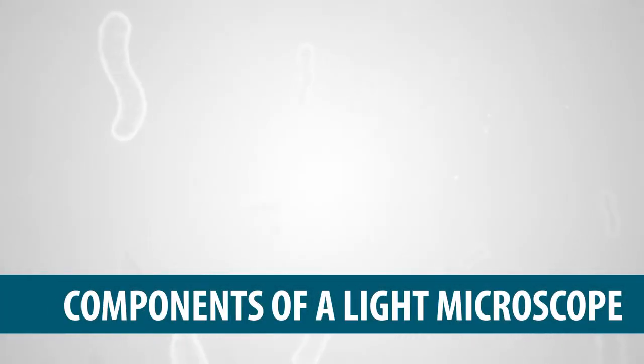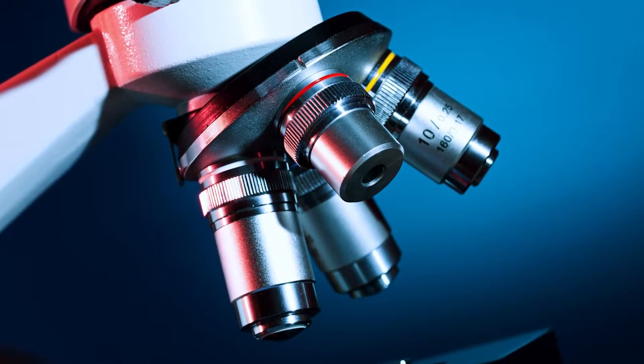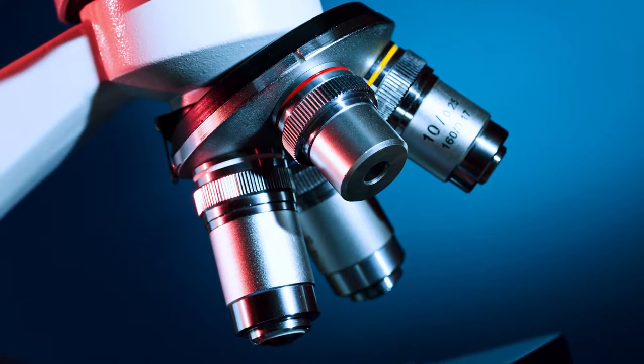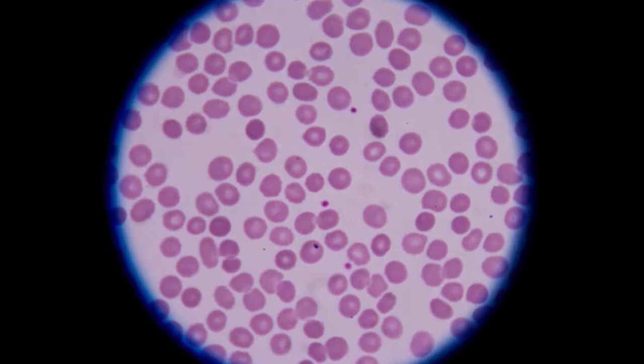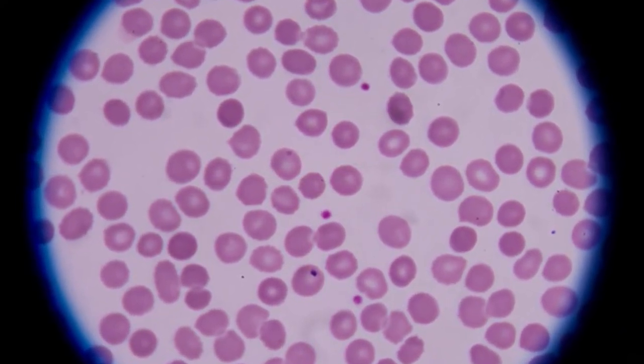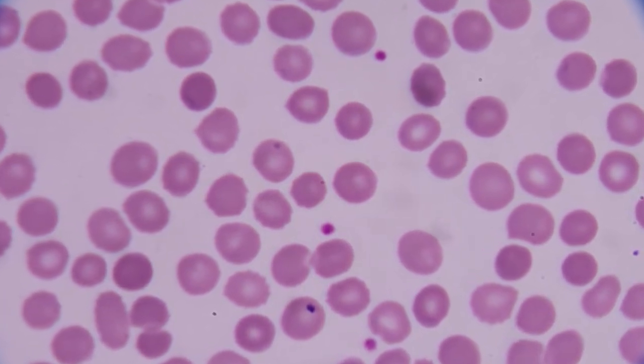Components of a light microscope. Brightfield or compound light microscope is an instrument most commonly used in microbiology labs. When objects are examined they appear as dark objects in a bright visual field. In this section we focus on the most important parts and function.